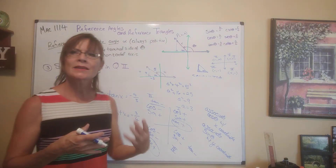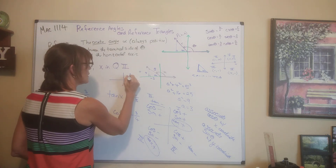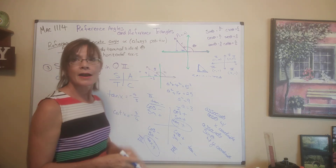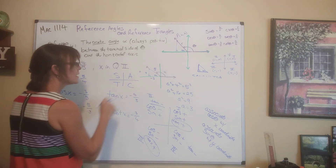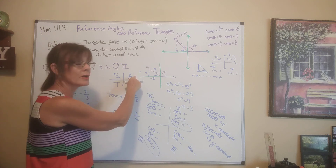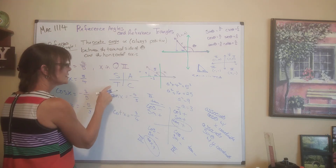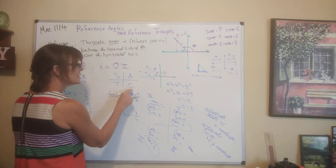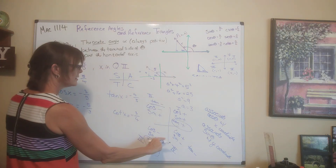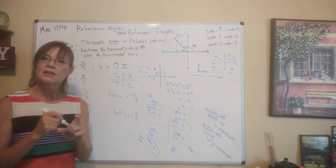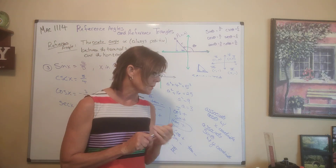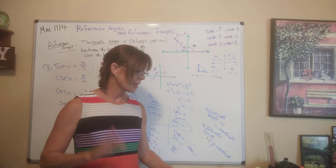A memory trick is 'All Students Take Calculus.' A stands for all positive — sine, cosine, and tangent are all positive in quadrant 1. S means sine is positive in quadrant 2. T means tangent is positive in quadrant 3. C means cosine is positive in quadrant 4. If this helps you memorize the signs, use it. Next we'll go on to learn about some special triangles that will become really important.